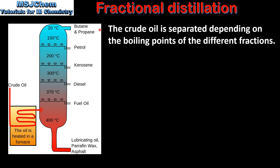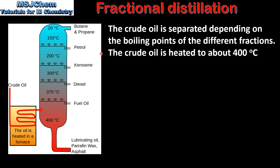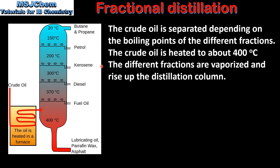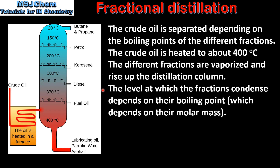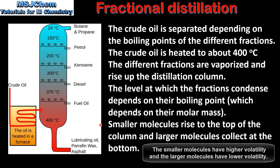In fractional distillation the crude oil is separated depending on the boiling points of the different fractions. The crude oil is heated to about 400 degrees C. The different fractions are vaporized and rise up the distillation column. The level at which the fractions condense depends on their boiling point, which in turn depends on their molar mass. Smaller molecules rise to the top of the column and larger molecules collect at the bottom.